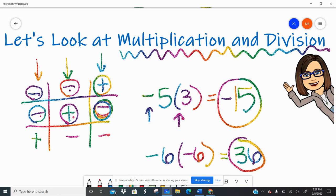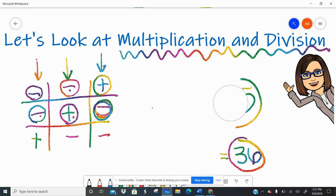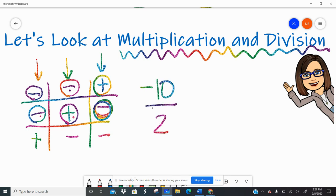This works the exact same with division. So for all of us that really don't like division, don't worry. This is not that hard. It's pretty easy peasy. All right. So if I have negative 10 divided by 2,